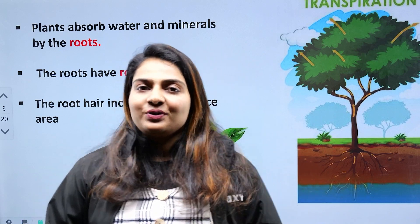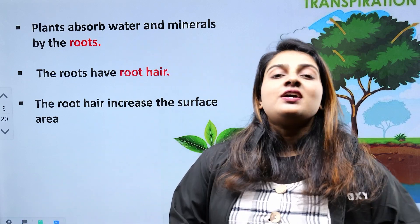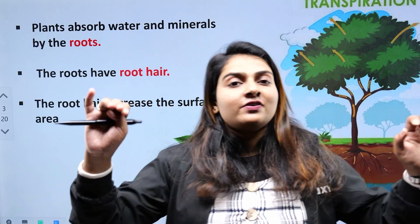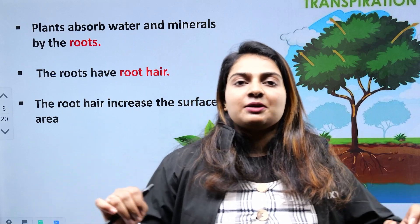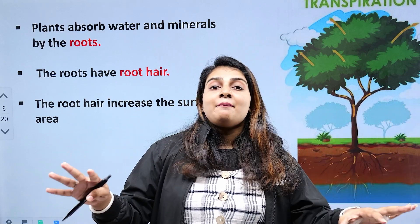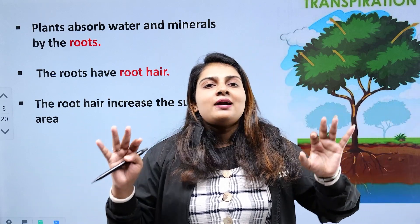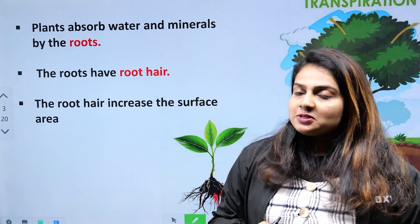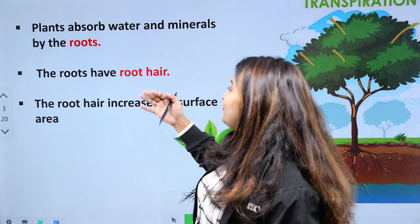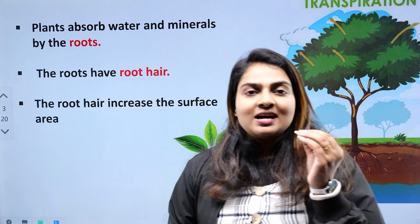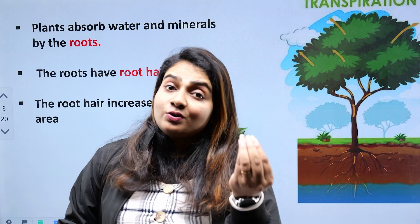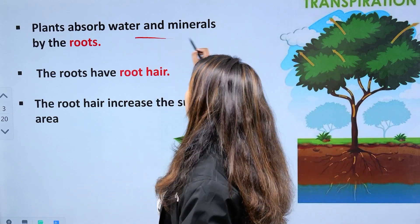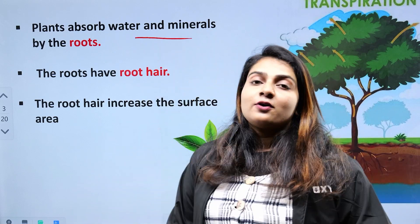What are these root hairs? They increase the surface area. If you increase the surface area, you will absorb more water and minerals. If you increase the root hairs, you increase the surface area. So, plants absorb water and minerals by roots.